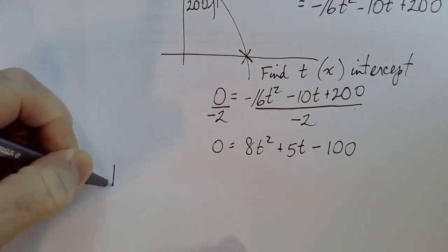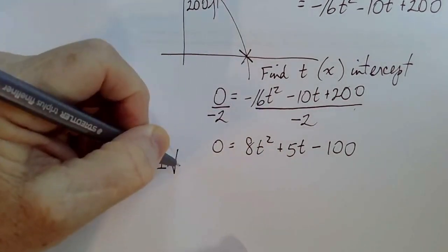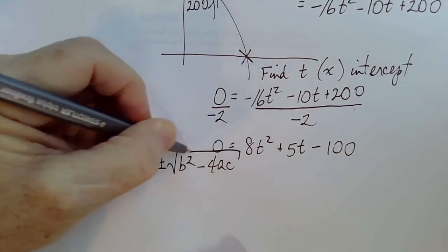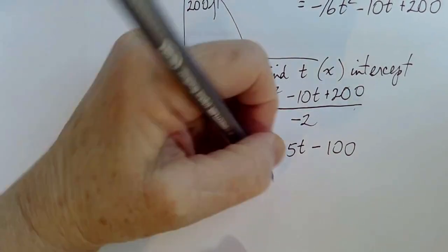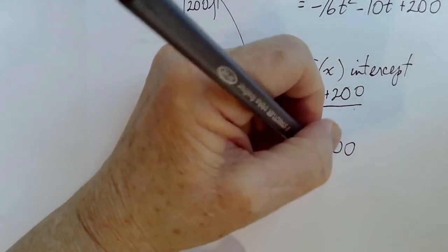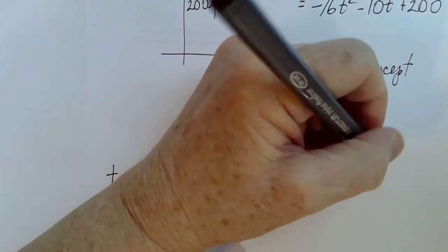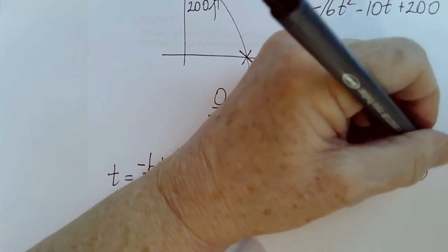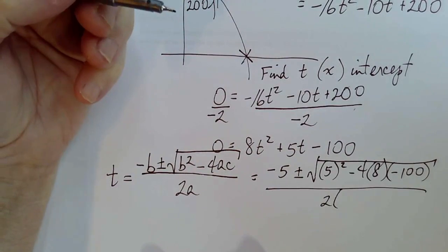So I know that t is equal to negative b plus or minus the square root of b squared minus 4ac all over 2a. So negative 5 plus or minus 5 squared minus 4 times 8 times negative 100 divided by 2 times 8.